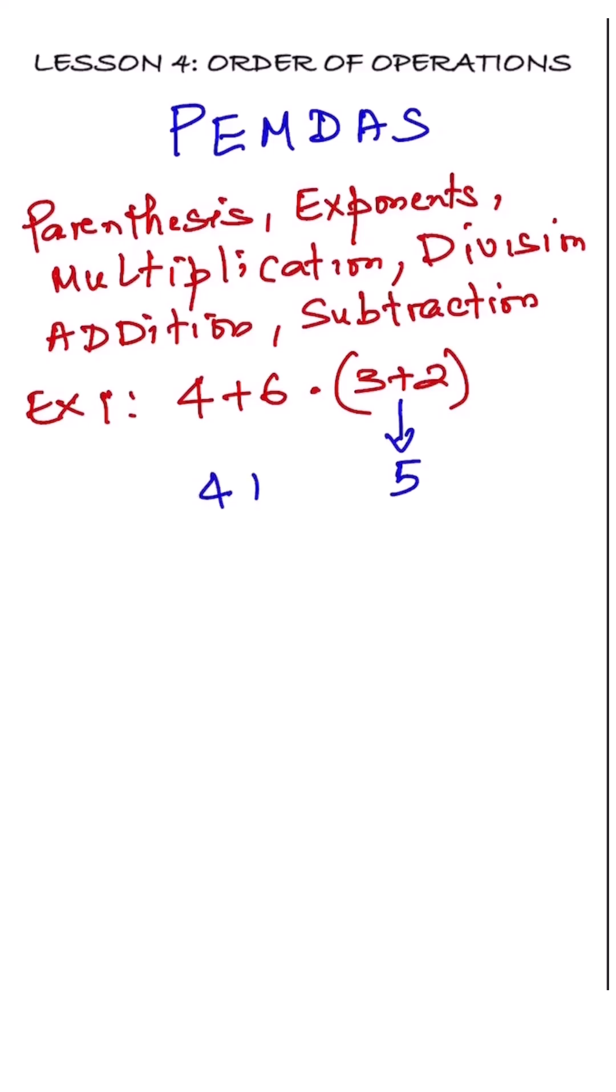Now the problem becomes 4 plus 6 times 5. Next, handle multiplication before addition. 6 times 5 equals 30. Now we have 4 plus 30. Finally, add them together to get 34.